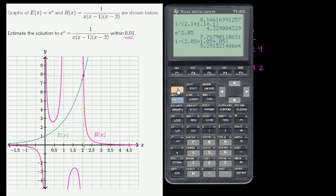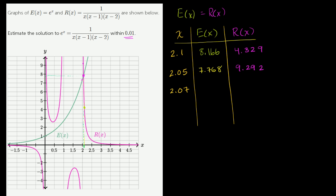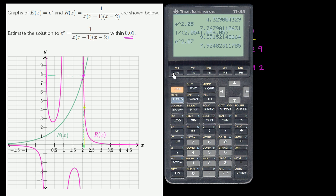So e to the 2.07 equals 7.925. I want to do all of this in green just to be color consistent.